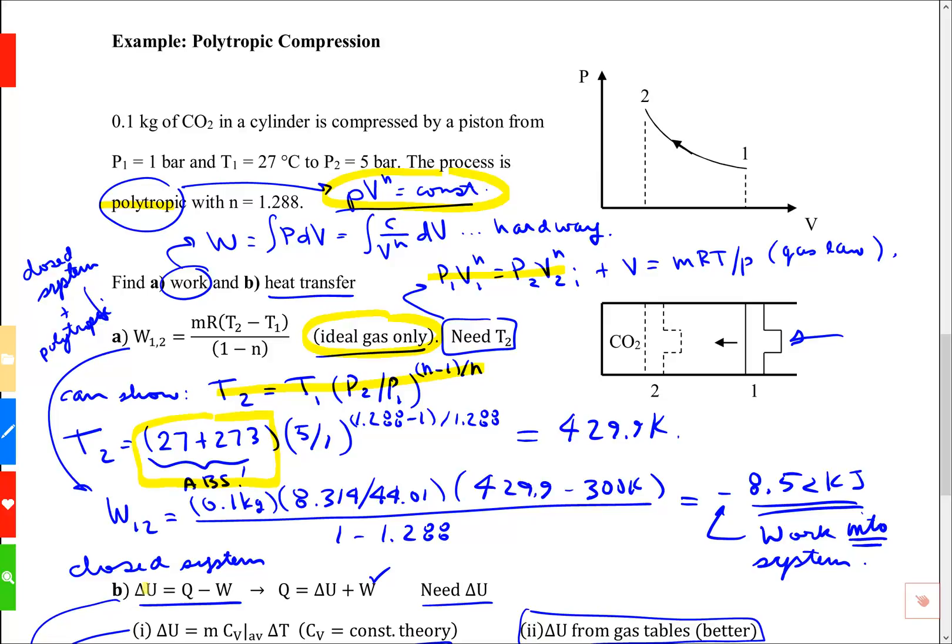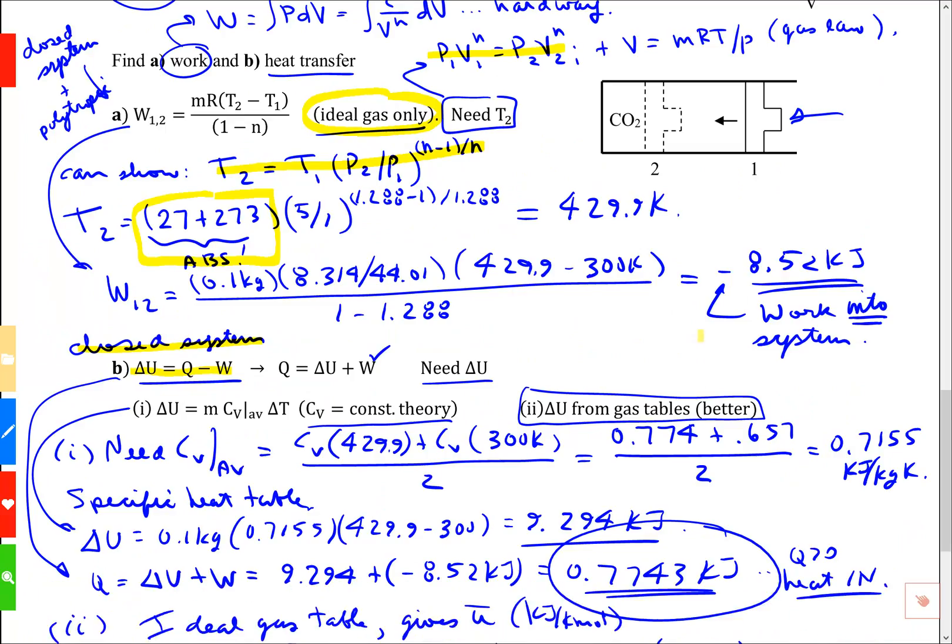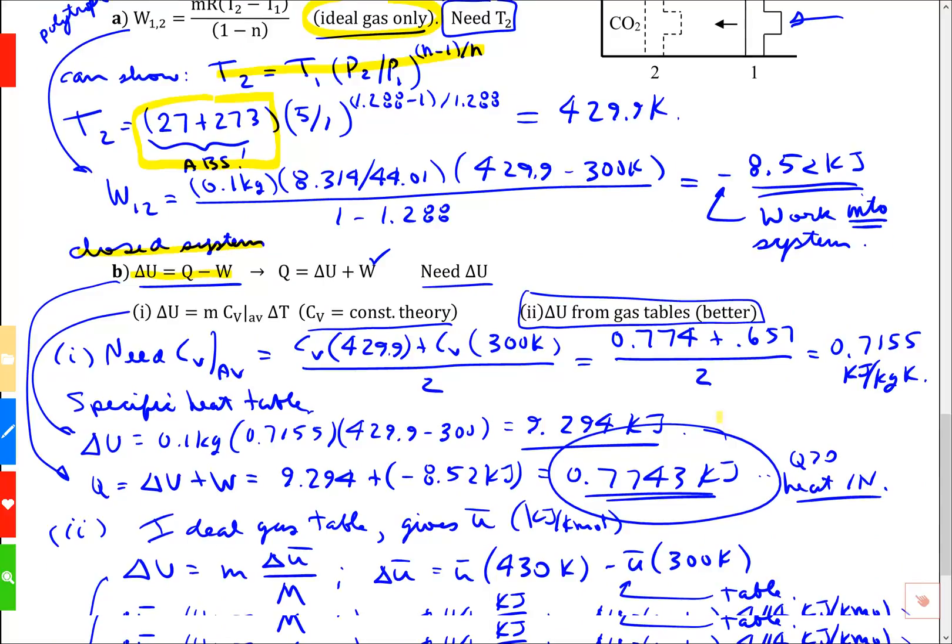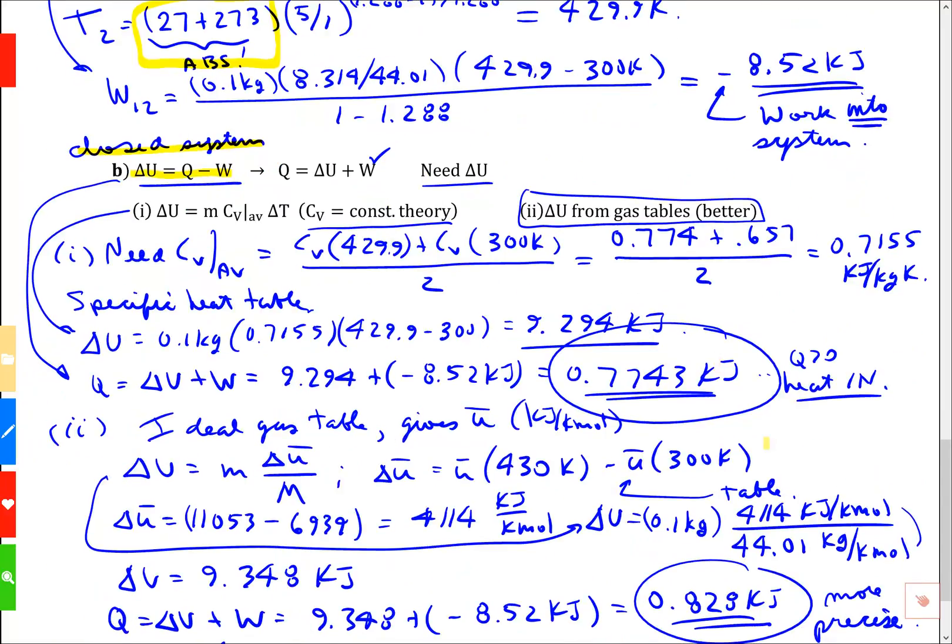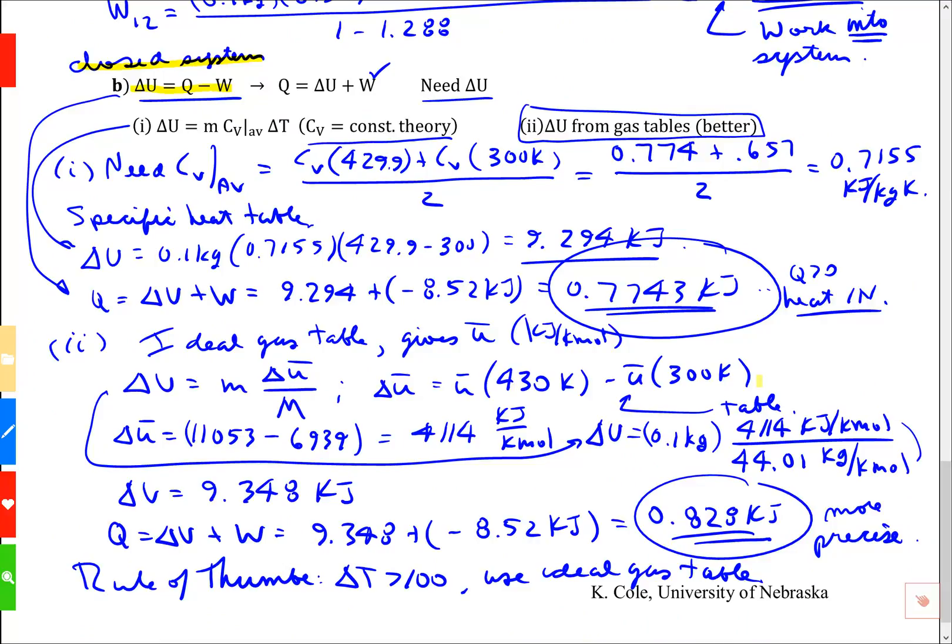We did an energy balance here on a closed system to look for the heat. We found that there were two ways to do the specific heat. One was an approximation based on Cv equals constant. We found that the gas tables give a different number, and I want you to use the gas tables if the temperature change is large. And if you do that, all will be well. Thank you.